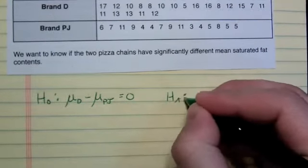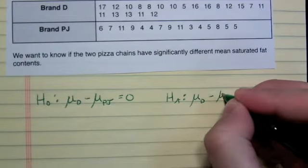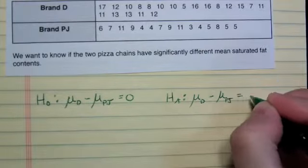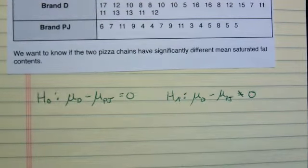The alternative then will be there is a difference between Brand D and Brand PJ, meaning whenever I subtract them, there is not a difference of zero. One of them is bigger than the other.